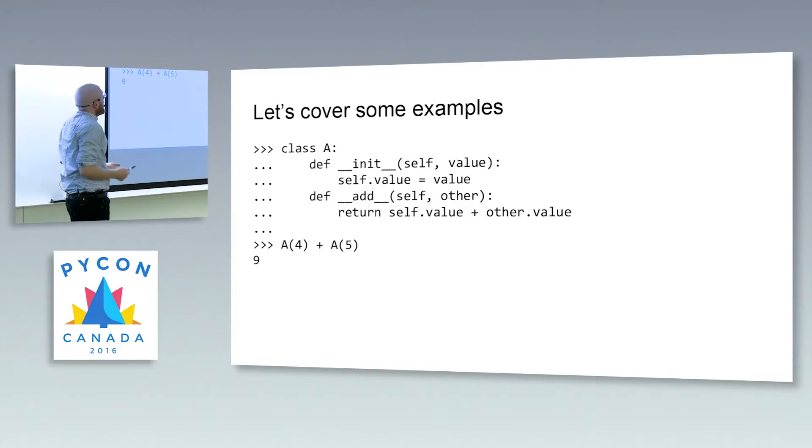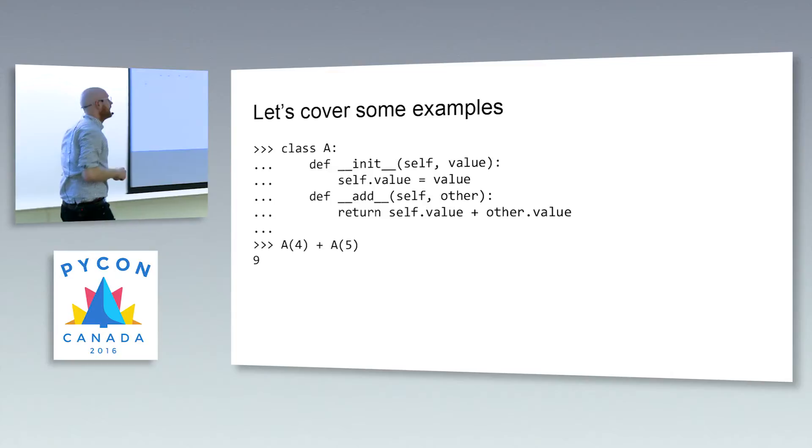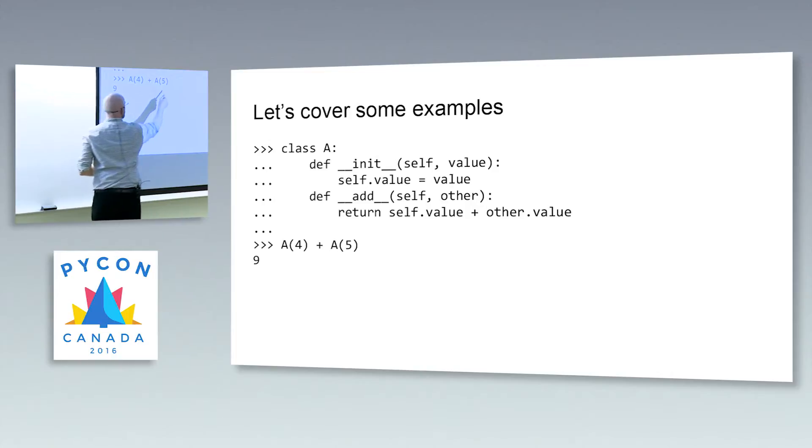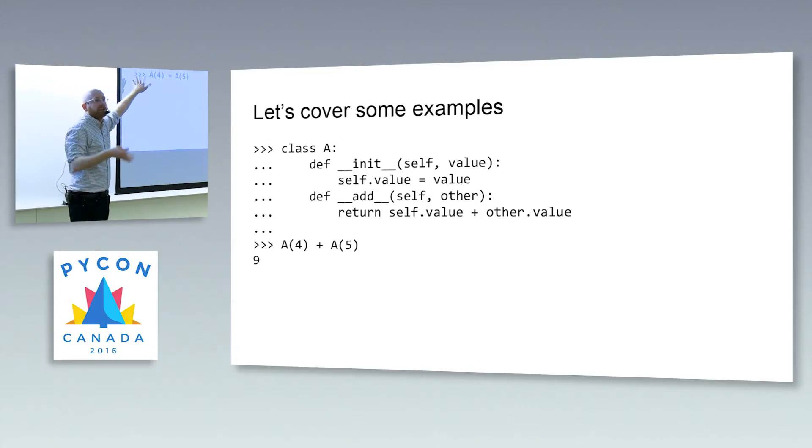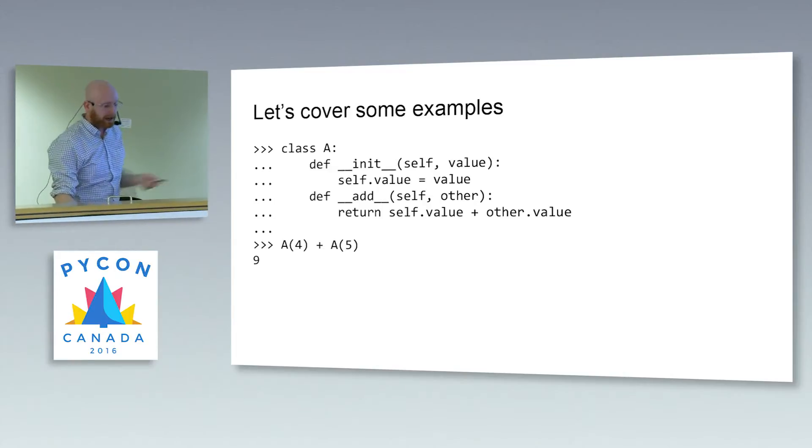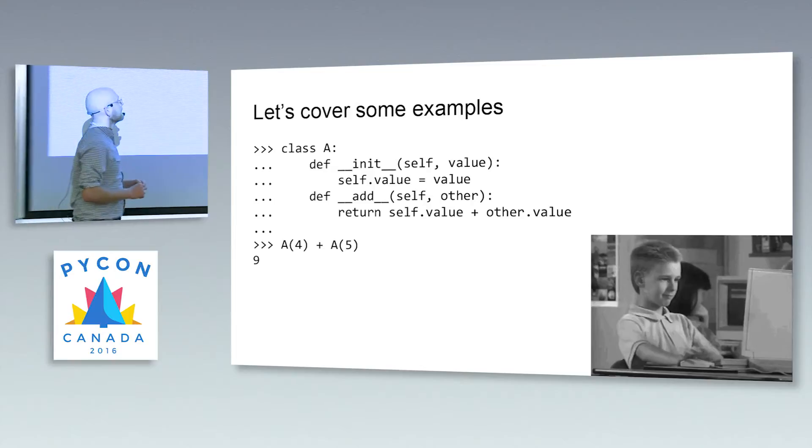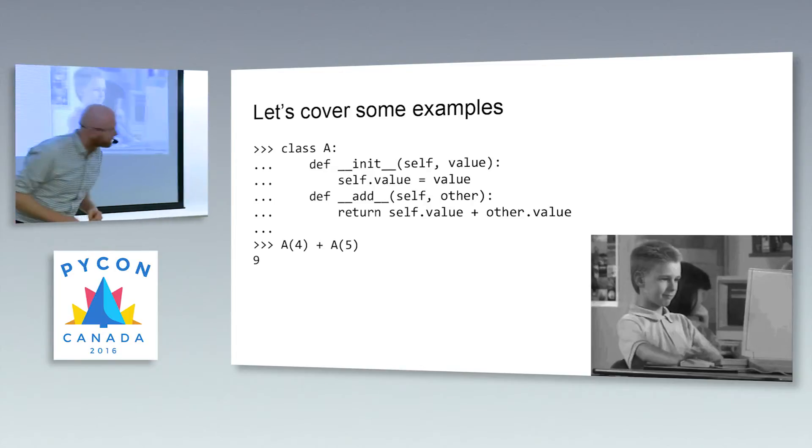Dunder init says, all right, I've already got the memory, let me kind of configure it how I want it to be configured. And we'll define a class that upon instantiation just takes some value. And then, if I added an instance of this class to another instance of the same class with different values, I want you to just take their values and add those together in a way that you know how. It operates exactly how I'd expect. I really didn't have to do anything fancy to now make classes that have pretty sweet semantic value.